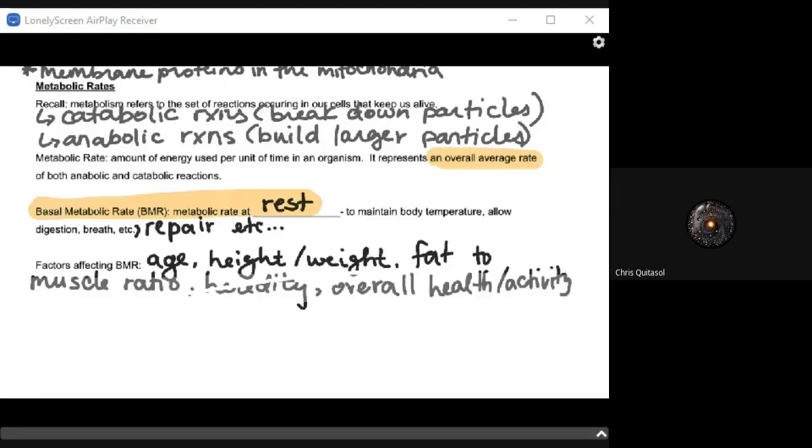What are some factors that affect it? Age, height, weight, fat to muscle ratio, heredity, overall health, how much activity you do, so many different factors affect that basal metabolic rate. My favorite one to talk about as I get older myself and I work with teenagers, it's very easy for me to make that direct connection.